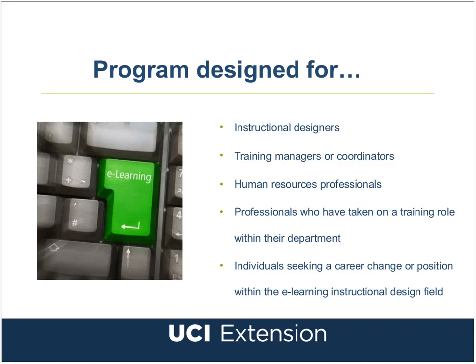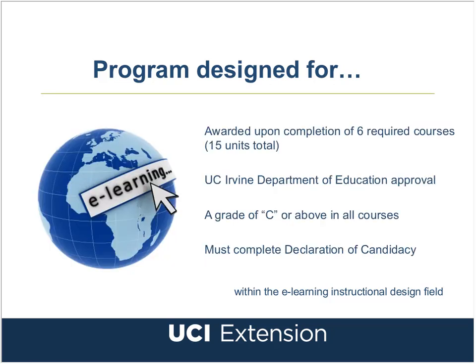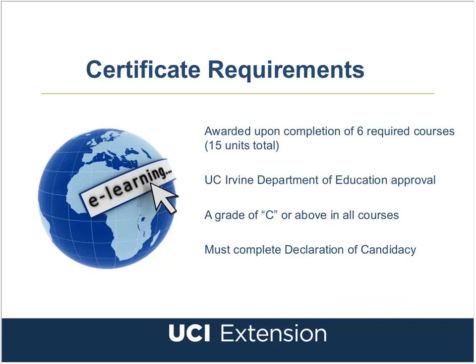To be successful in our certificate program, students must be comfortable navigating software applications and learning management systems. The certificate program is composed of six required courses, which add up to 15 units total. To be eligible for this certificate, students must complete all six courses with a letter grade of C or better, as well as a completed declaration of candidacy form. Since there is a small candidacy fee, I typically advise students to take a few classes first before they apply.